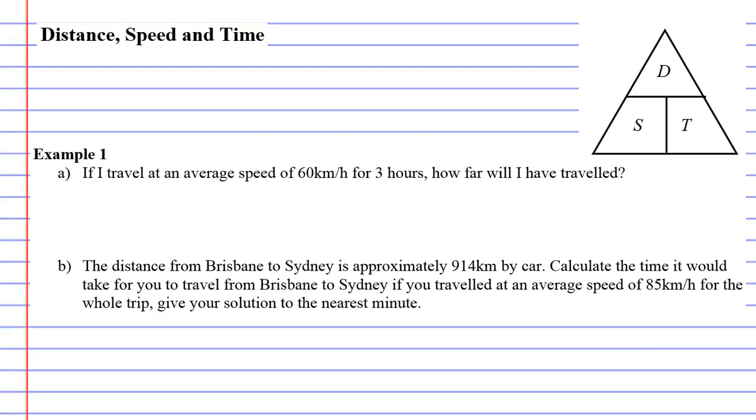Distance, speed and time. Now we've got an example here that we're going to go through, but before we get to that I want to explain the triangle on the right side. In fact, I'll start there. D is your distance.